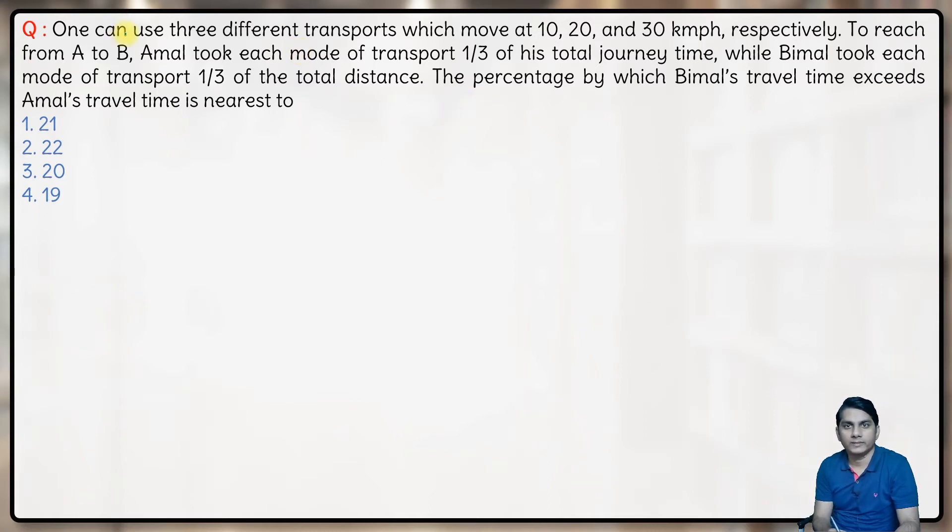Here in this question, one can use three different transports which move at 10, 20, and 30 kilometers per hour respectively to reach from A to B. This is point A, you have to go from point A to point B.